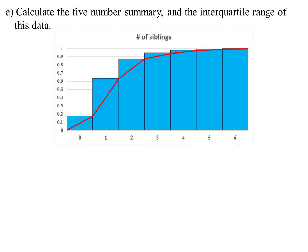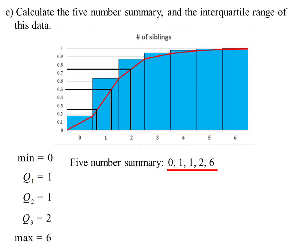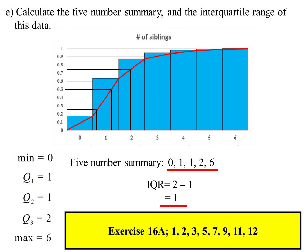Calculate the five number summary and interquartile range. The minimum is zero. Q1 is 25%, and using the ogive, we go across, hit the ogive in column one, so Q1 is one. The median (Q2) at 50% also ended up in one. Q3 at 75% is in column two. Maximum is six. The five number summary is 0, 1, 1, 2, 6. The interquartile range is Q3 minus Q1, which is 1. That's our recap of discrete distributions.